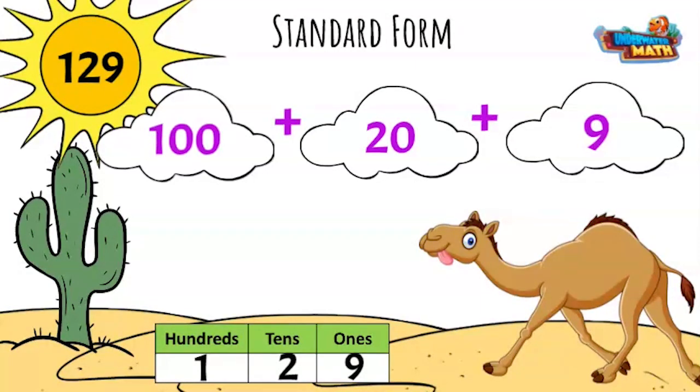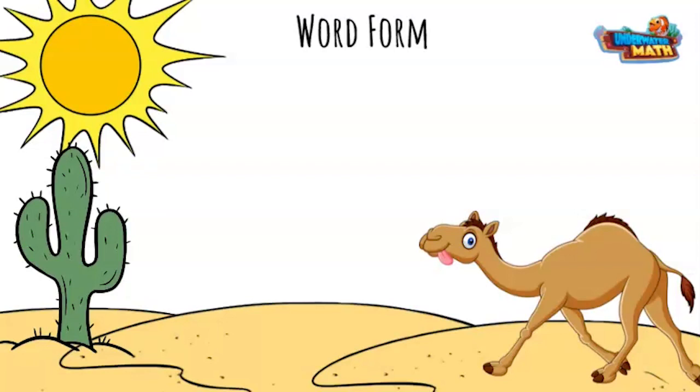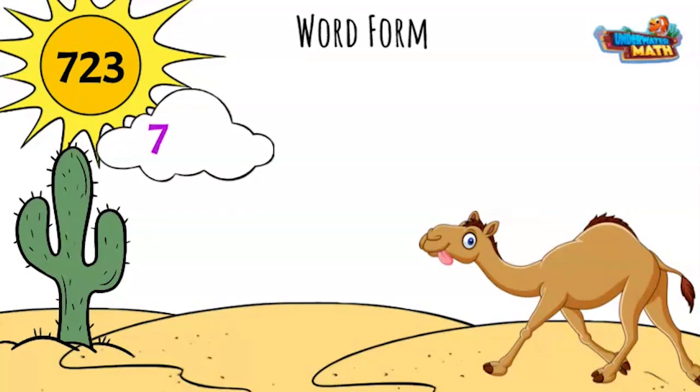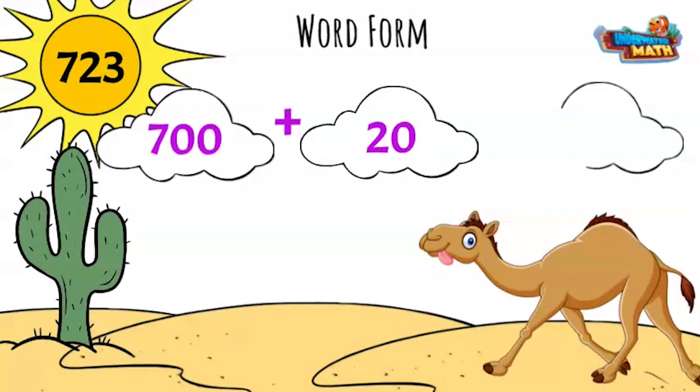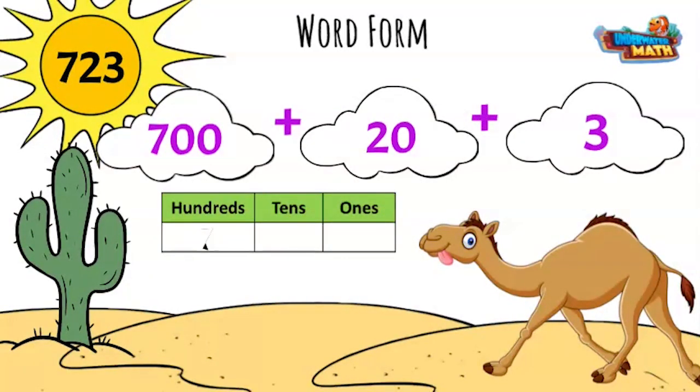Check the sun for the standard form. Word form is writing the number with words. The sun shows the standard form of 723, and the clouds show the expanded form of the same number. We use this information to write the word form of the number.